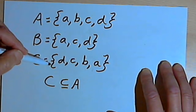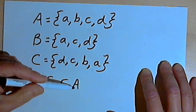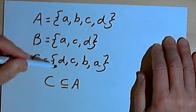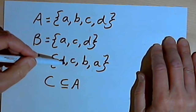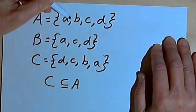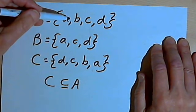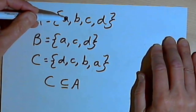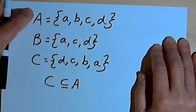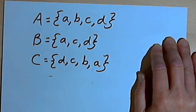So equal sets can be considered as subsets — one would be the subset of the other. To be a subset, all of a set's elements must be elements of another set, its superset. They can be exactly the same elements, or they can be just some of the elements that are in the superset.